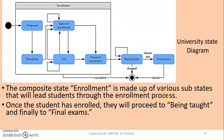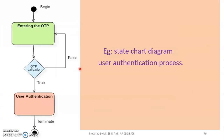This is a university state diagram example. This shows a composite state, which contains a starting state inside. The composite state contains a state box, a decision box, and a final termination symbol.